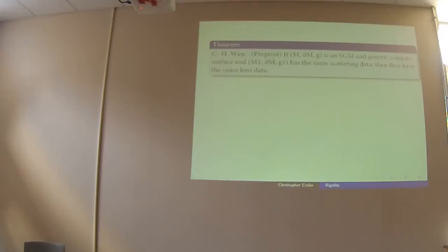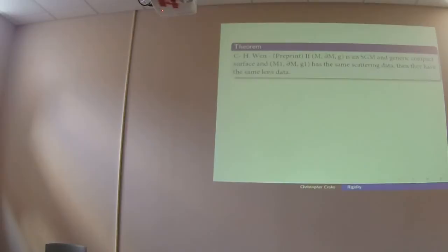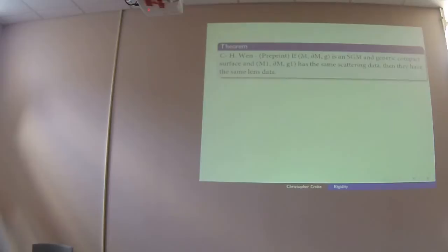Last summer, with Ho-Min, we showed that for the SGM case — generic, meaning finitely many switch points between convex and concave boundary curvature — if you have the same scattering data, then you have the same lens data. But it's very two-dimensional. We still don't know anything about, say, the flat three-ball. The question of whether scattering data determines lens data for the flat three-ball is open. Most of what I say is about all dimensions, but the theorems tend to be in two dimensions, while the questions tend to be in higher dimensions.